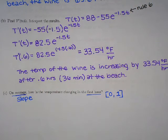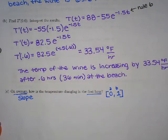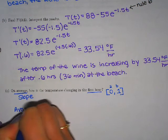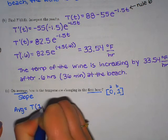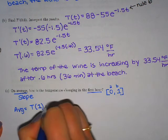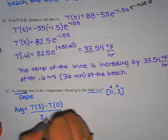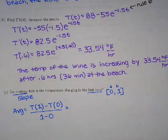So we're going from zero hours of being there to one hour of being there when it says in the first hour. So that we have our A to B. So we're going to use the slope formula to find the average change. So we're going to plug in T of one, the temperature after one hour, and to compare that to the temperature after zero hours over one minus zero.